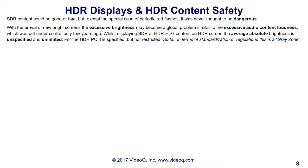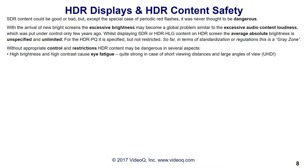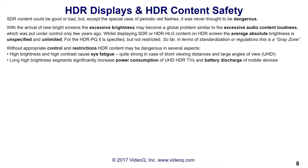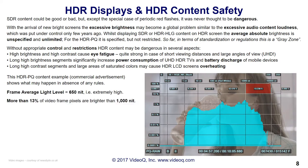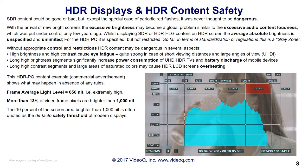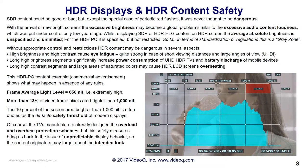Without appropriate control and restrictions, HDR content may pose dangers in several aspects. High brightness and high contrast cause eye fatigue, quite strong in case of short viewing distances and large angles of view — for example, with new UHD TVs. Long, high brightness segments significantly increase power consumption in large UHD HDR TVs and battery discharge in mobile devices. Long, high contrast segments may cause HDR LCD screens to overheat due to occasional local dimming control failures. And this HDR PQ advertising example shows what may happen in the absence of any rules at all.